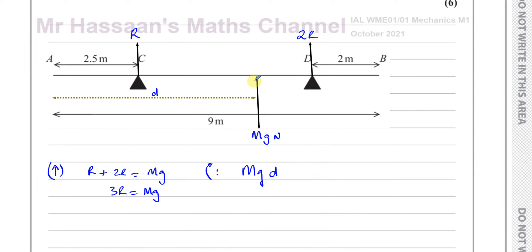That's the clockwise moment about A. And that's equal to the anticlockwise moment about A which is basically R times 2.5 plus 2R times this distance over here. And that distance is going to be 9 minus 2 which is 7 meters. The total distance there is 7 meters because the whole distance is 9 and from D to B is 2. So that's 2R times 7.